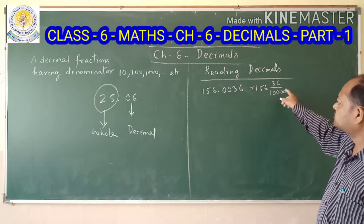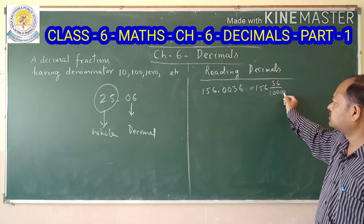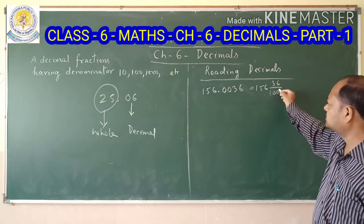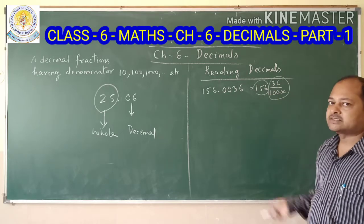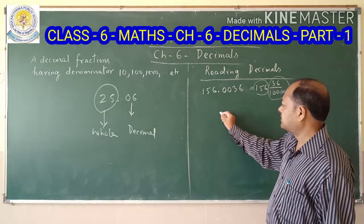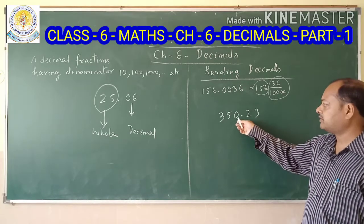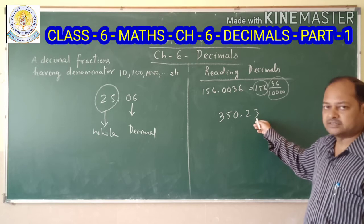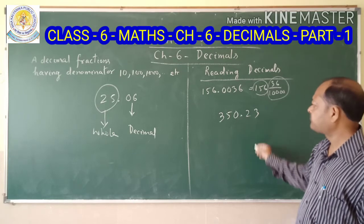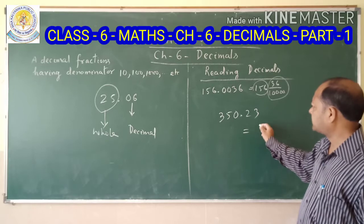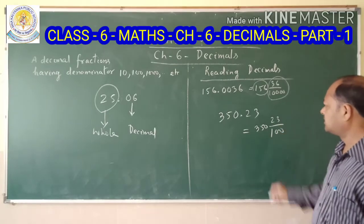Let us look at more examples. Consider 350.23. We can represent this decimal as a fraction: 350 is the whole part and 23 by 100 is the decimal part. So 350.23 equals 350 and 23 over 100.